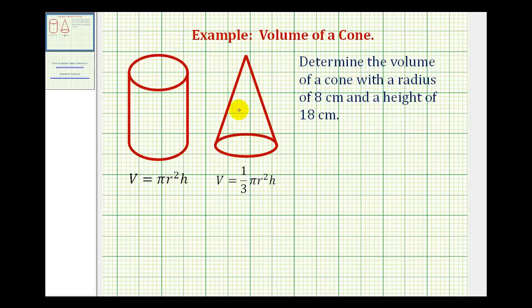To determine the volume of a cone pictured here, we use the formula V equals one-third pi r squared h, where r is the length of the radius of the base and h is the height.